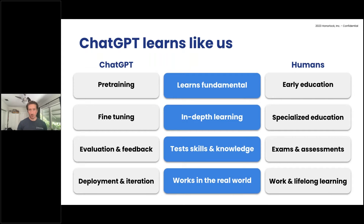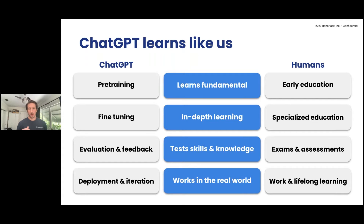Phase two of training a model like ChatGPT is around fine-tuning. This is where you attempt to tune it by teaching it what type of responses a human user would actually prefer. ChatGPT's team referred to this as supervised fine-tuning.